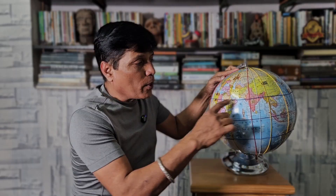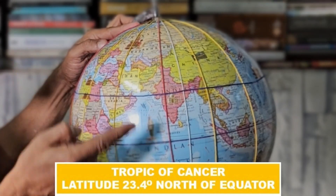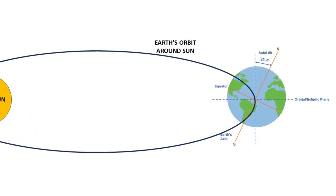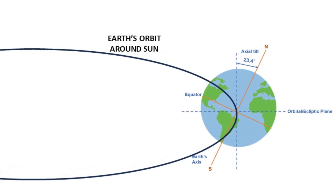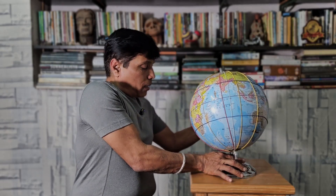There is one more interesting thing about Ujjain. It's not only the Prime Meridian that passes through Ujjain — the Tropic of Cancer also passes through Ujjain. The Tropic of Cancer is a latitude of 23.4 degrees north of the equator. This 23.4 degrees matches with the tilt of Earth's axis. Earth's rotational axis tilts or makes an angle of 23.4 degrees with its plane of orbit around the Sun. Just like the Tropic of Cancer in the Northern Hemisphere, there is the Tropic of Capricorn in the Southern Hemisphere, also at 23.4 degrees south of the equator. The phenomena that occur due to this tilt are the seasons.